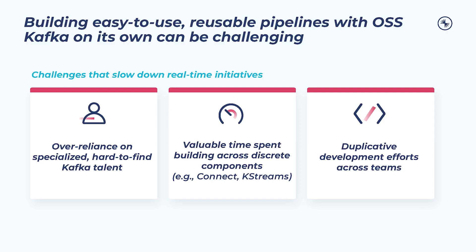However, folks can still face major challenges when trying to efficiently build streaming data pipelines on OSS Kafka. That might be chalked up to a shortage of specialized Kafka talent, which slows down dev cycles, or the time-consuming process of writing boilerplate code for everything you do. Or it could be a lack of a unified view or any kind of GUI to observe, edit, and manage things throughout the pipeline lifecycle.